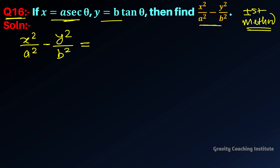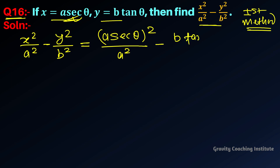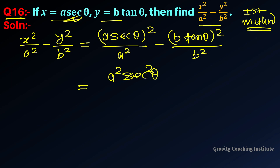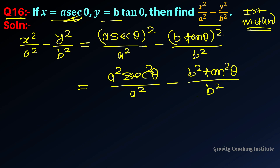We put x equals a·sec(θ), so x² becomes (a·sec(θ))² over a², and y equals b·tan(θ), so y² becomes (b·tan(θ))² over b². Opening the squares, we get a²·sec²(θ) over a², and b²·tan²(θ) over b².